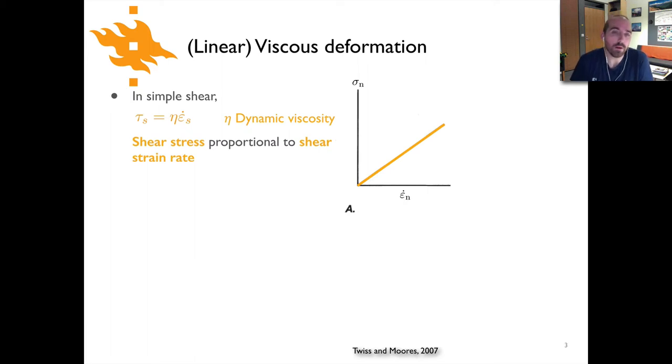When we talk about viscous deformation, and particularly linear viscous deformation, we're talking about a relationship between the stress—in this case the shear stress τ—and the strain rate ε̇s. The proportionality constant here is called the dynamic viscosity η.